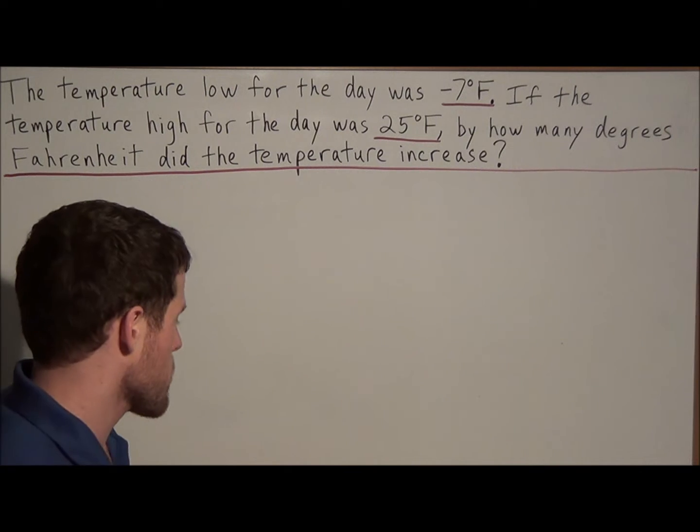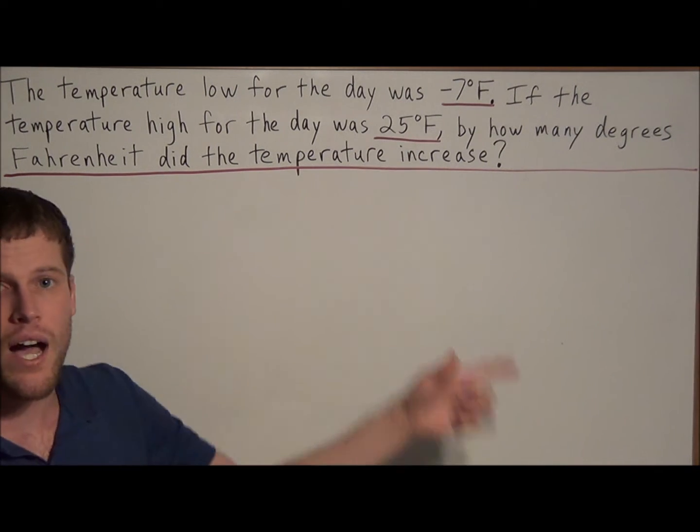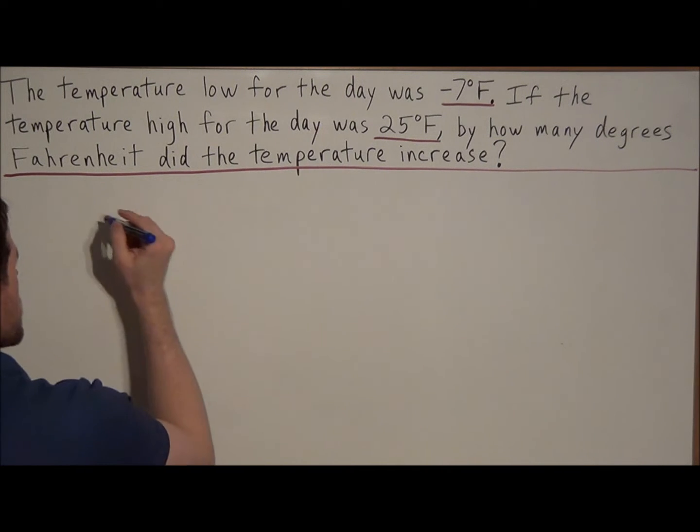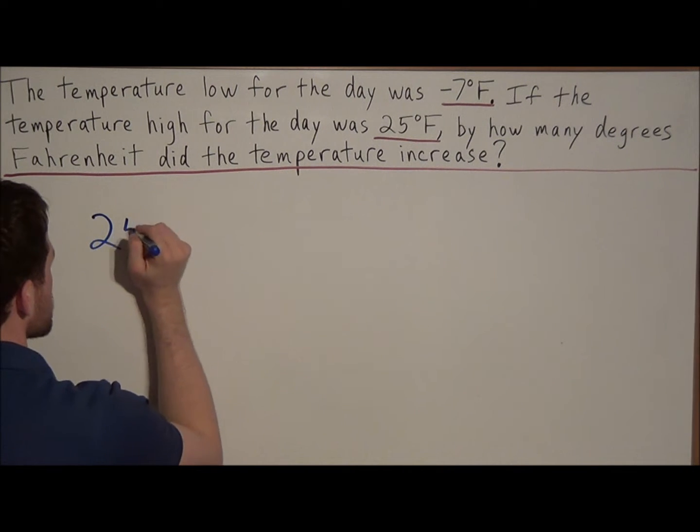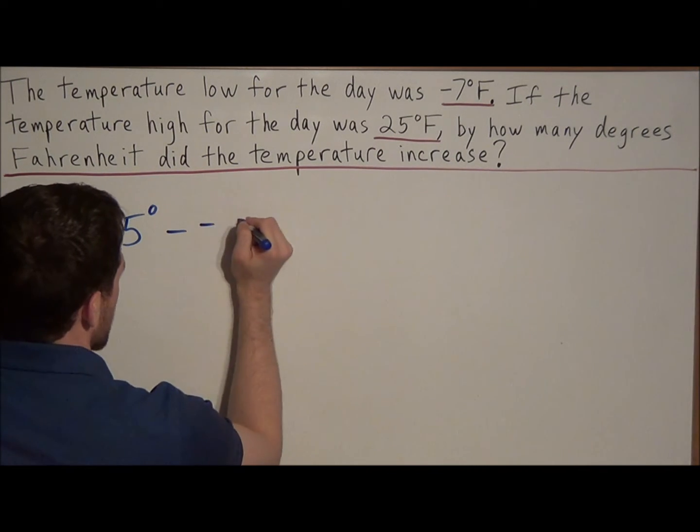So if we want to find out how much the temperature changed, we can subtract the low temperature from the high temperature. That is, we're going to set up 25 degrees minus the low temperature was negative 7 degrees.